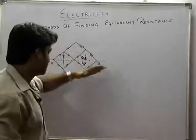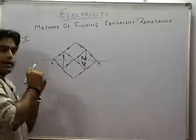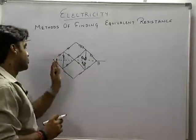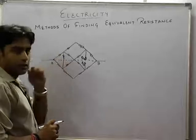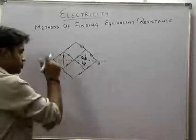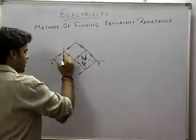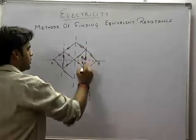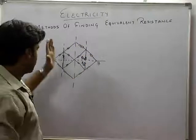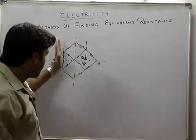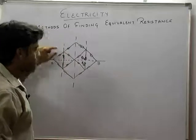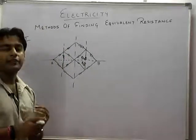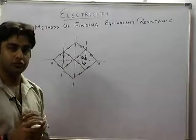Ab ye agar axis of symmetry hai, then all the lines that are perpendicular to this line — jo bhi perpendicular line let us suppose ye line hai, ye line hai, koi bhi line — aur un points pe, in lines pe, in perpendicular lines pe, jo bhi nodes ya junctions layenge, they will be at equipotential.